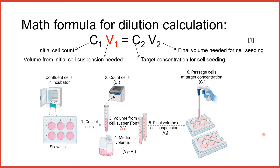I annotated the schematic from the previous slide on cell passaging to show where each of these variables come in experimentally. The volume of fresh media to add is therefore the volume needed from the initial cell suspension, V1, subtracted from the final volume of cell suspension for seeding, V2.